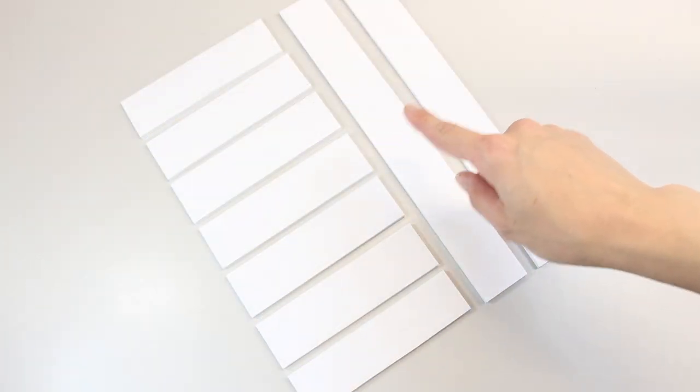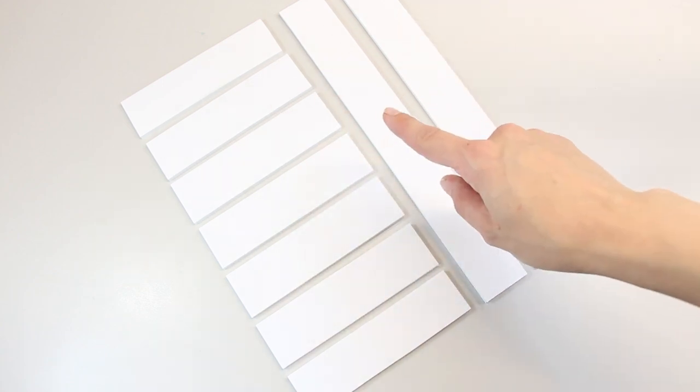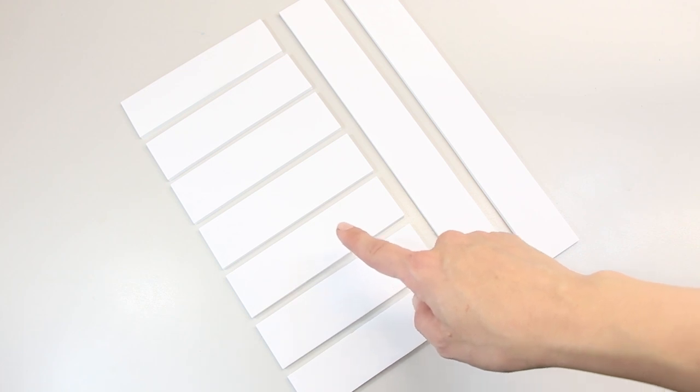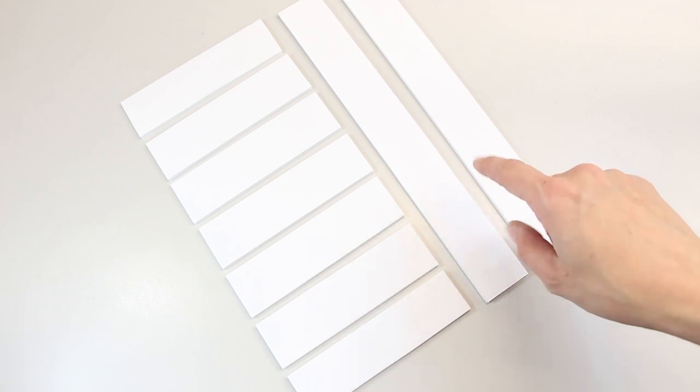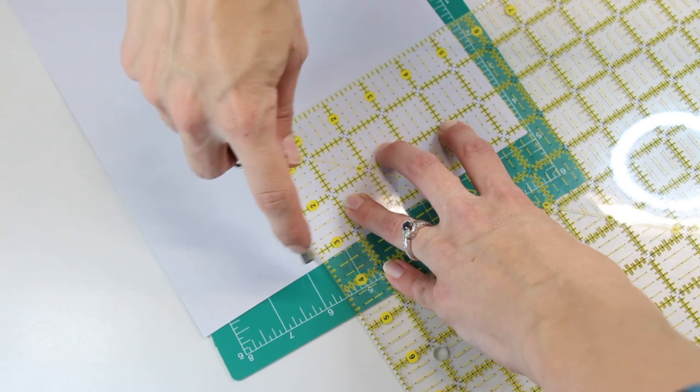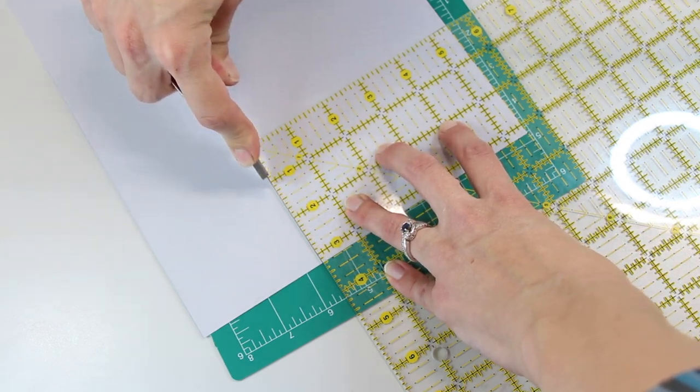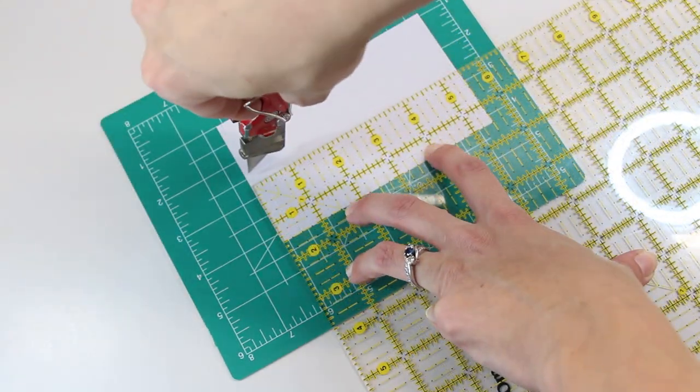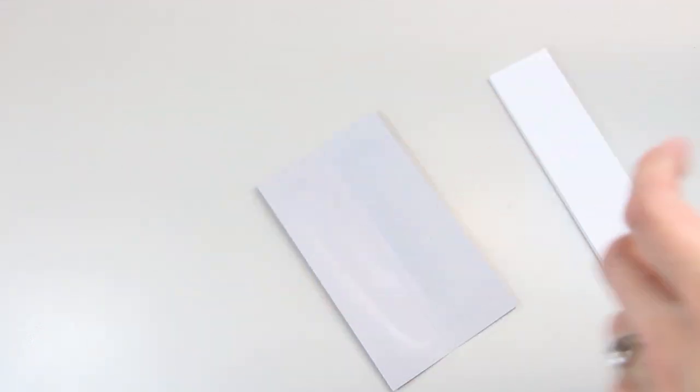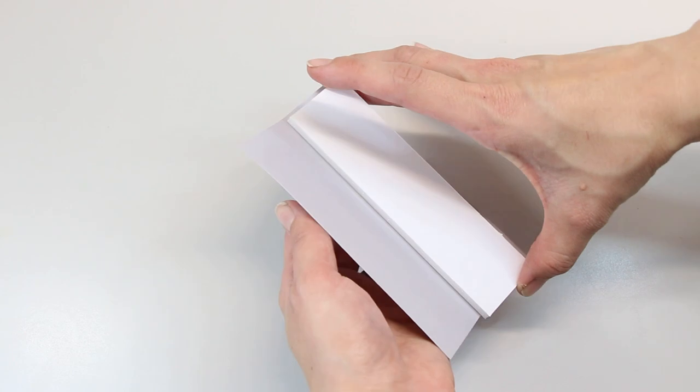While that's drying, you can build the shelf. Cut seven, five-and-a-half inch pieces. Then I cut paper to cover the shelves, sides, and top and bottom. I scored the paper so it has a sharp fold for the shelves. Glue the paper around three of the shelves.